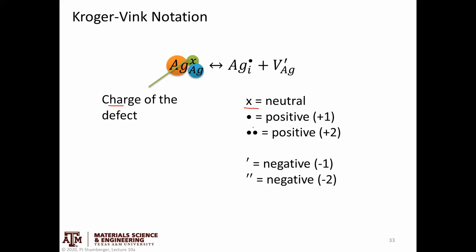X in the superscript means neutral. Dots represent positive charge — one dot is plus one, two dots is plus two, et cetera. Little dashes represent negative charge — one dash is negative one, two dashes is negative two, et cetera.